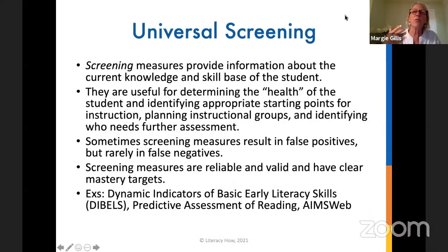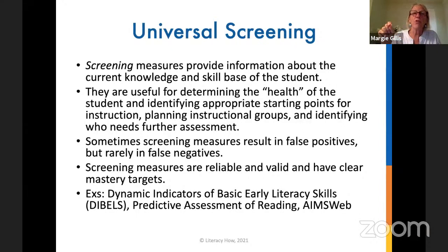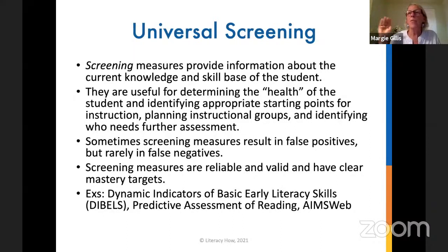Student data from CBMs can be compared to local data — meaning classroom, grade level, school level, and district level data. That's an important concept because not all progress monitoring assessments are CBMs. Screening measures provide information about a student's current level of knowledge and skills base. They're useful for determining the health of the student and identifying a starting point for instruction and planning grouping. They're considered reliable and valid and have clear mastery targets — well-defined benchmark goals. Examples of universal screeners include the DIBELS, the Predictive Assessment of Reading (PAR), and AIMSweb.